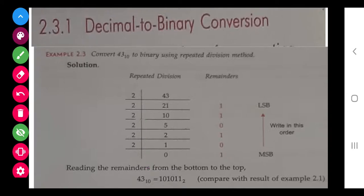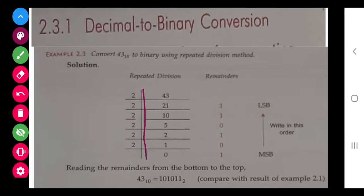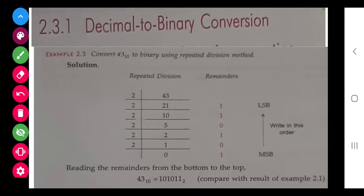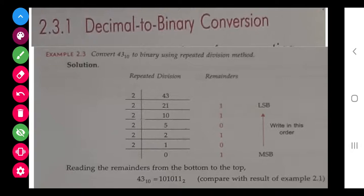For example, to convert 43 base 10 to binary: 43 divided by 2 gives quotient 21 and remainder 1. Then 21 divided by 2 gives 10 remainder 1. Continue dividing by 2 until the quotient becomes 0 — when 1 is divided by 2, quotient is 0 and remainder is 1. We collect all remainders and go from bottom to top.